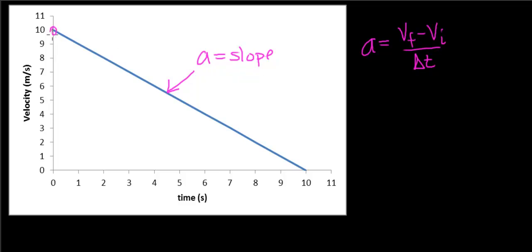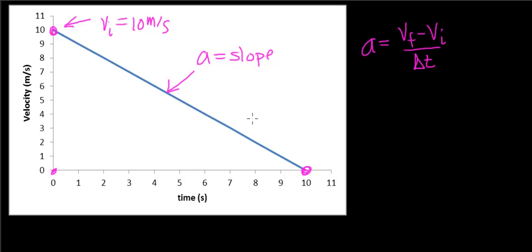In this case, I'm going to pick two points — the easiest points I can recognize. I'm going to call my initial velocity 10 meters per second, which is the velocity when time equals zero. And for my final velocity, I'm going to choose the point where it crosses the time axis, where the final velocity will be zero meters per second.